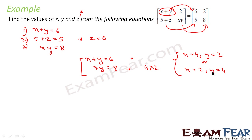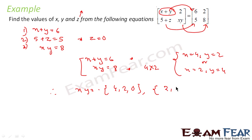There are two sets of answers: the first is x = 4, y = 2, z = 0, and the second is x = 2, y = 4, z = 0. Both satisfy 4 + 2 = 6 and 4 × 2 = 8. We just equated the corresponding elements of these equal matrices.